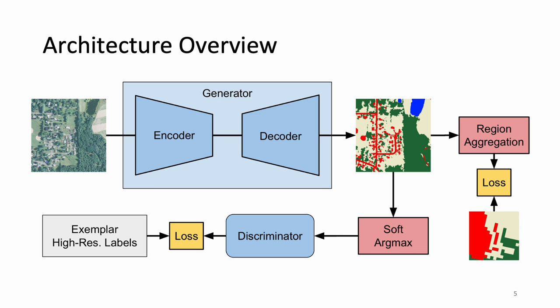We present a framework for semantic segmentation in the event of resolution mismatch. Our method has several key components. First, it incorporates the concept of region aggregation to allow the network to output native resolution predictions without upsampling the low-resolution target label. Second, it uses adversarial learning combined with an exemplar set of high-resolution labels to encourage predictions to be fine-grained. Third, it leverages self-supervised pre-training on a large set of unlabeled imagery to increase model generalization. The result is a method which bridges the performance gap between naively upsampling available low-resolution labels and assuming the existence of expensive high-resolution labels.